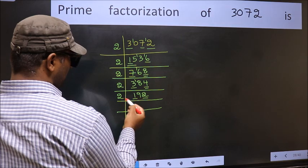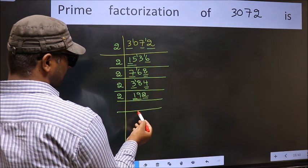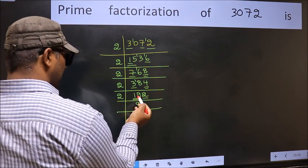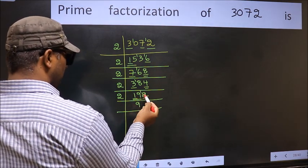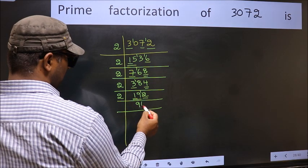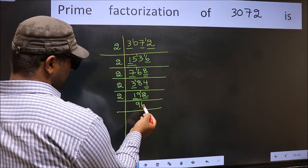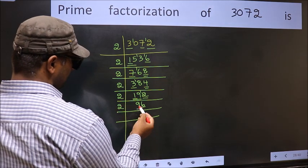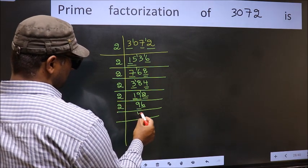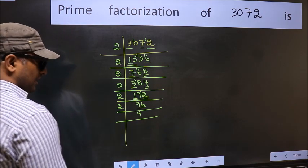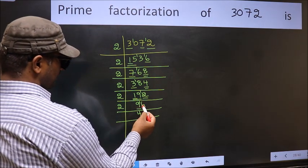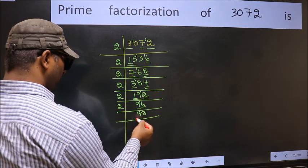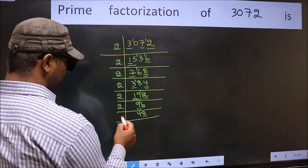First number — a number close to 19 in the 2 table is 2 times 9 is 18. 19 minus 18 is 1, carried forward 12. When do we get 12 in the 2 table? 2 times 6 is 12. Now the last digit 6, so take 2. First number 9 — a number close to 9 in the 2 table is 2 times 4 is 8. 9 minus 8 is 1, carried forward 16. When do we get 16 in the 2 table? 2 times 8 is 16. Now the last digit 8, so take 2.